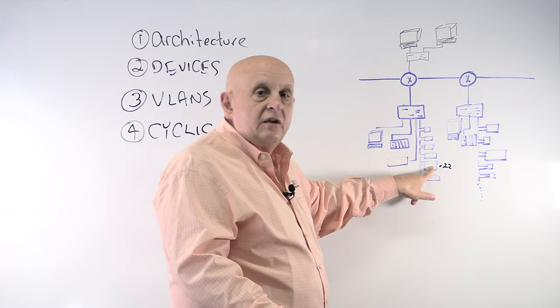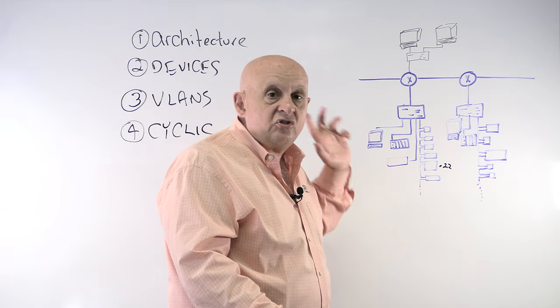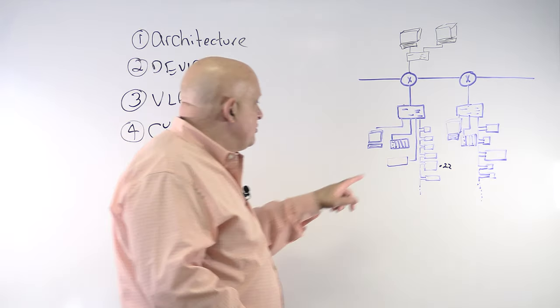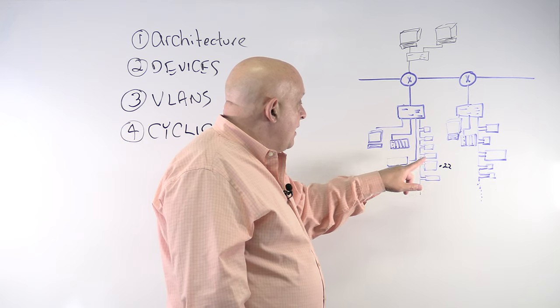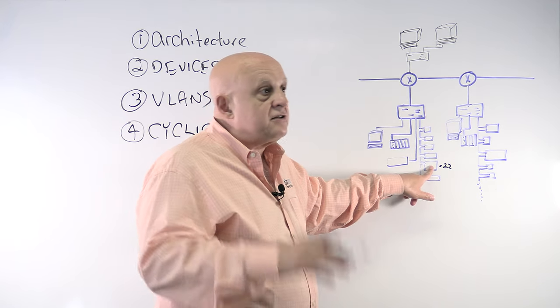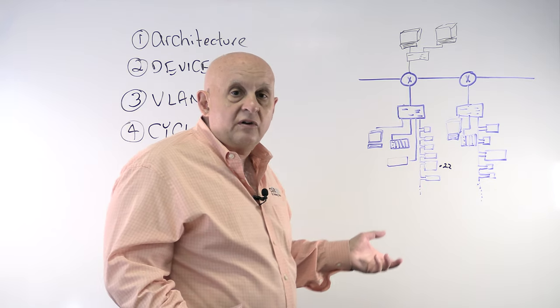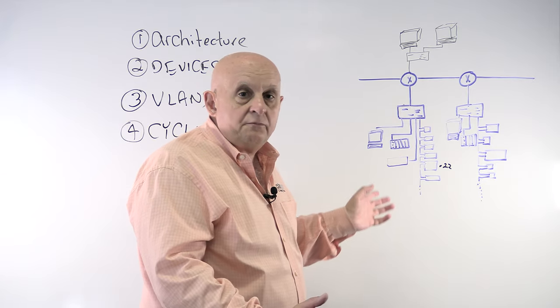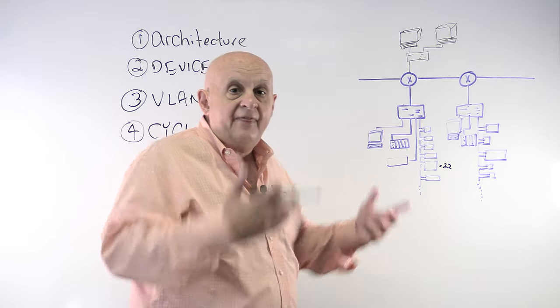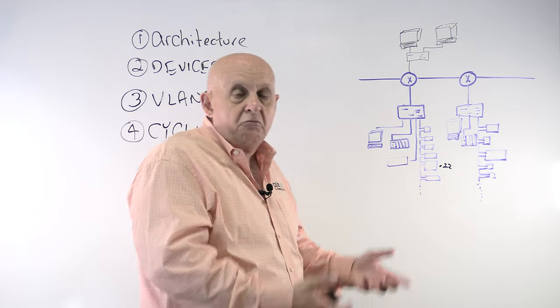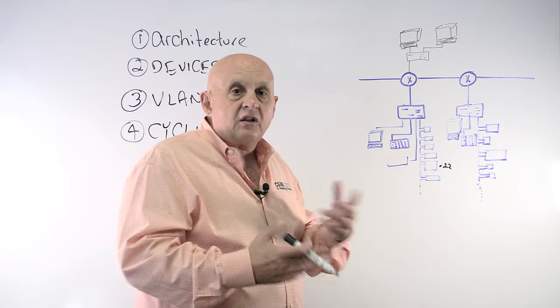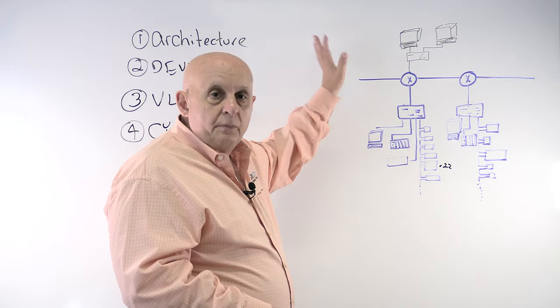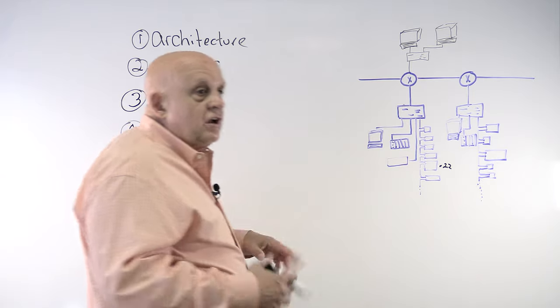And typically, if this is an Ethernet IP system, they're doing cyclic communications. So the controller will say to this device, and let's say this is a temperature controller. It's going to say to it, I want you to send me your data every one millisecond. I'm going to send you some communications every five milliseconds. So there's this cyclic communication. And that literally goes on forever. If the machine's running, if the machine's not running, as long as the power's on, this cyclic communication happens. So it's totally different than what happens in the IT world. Cyclic communications and other things.